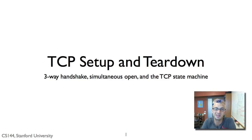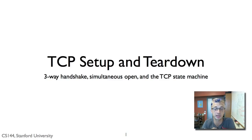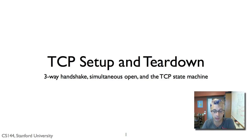In this video, I'm going to dig into the details of TCP connection setup and teardown. This is a deeper look than the initial service model we presented, looking at a couple of edge cases and the entire TCP state diagram. We're going to look at three-way handshake, simultaneous open — which is really important today in peer-to-peer applications — and the full TCP state machine for connection setup and teardown.